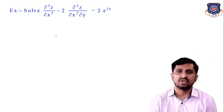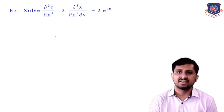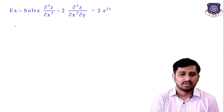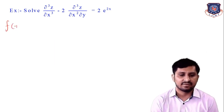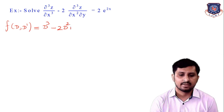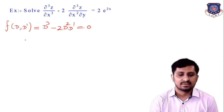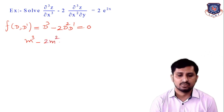Let's see how we can solve this. First, find the complementary function, then find the particular integral. The general solution is z = complementary function + particular integral. First, write f(D, D') = D³ - 2D²D' = 0. Converting to the auxiliary equation in m: m³ - 2m² = 0, where m = D/D'.